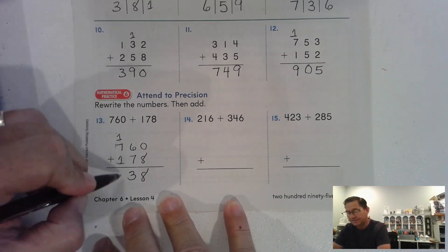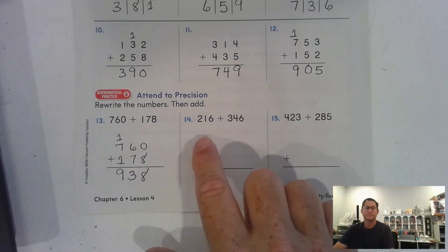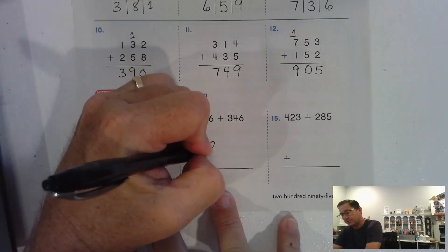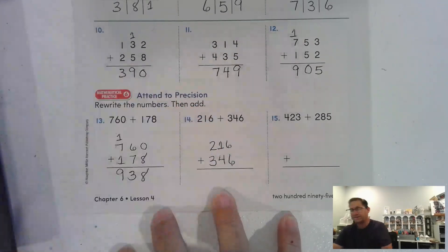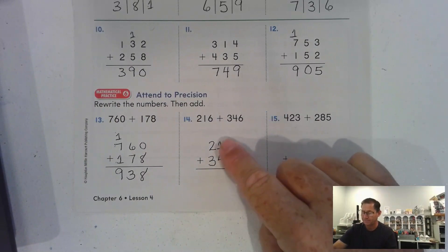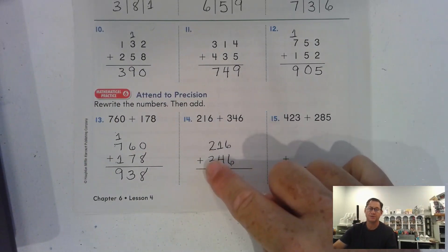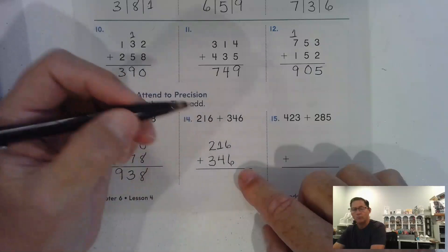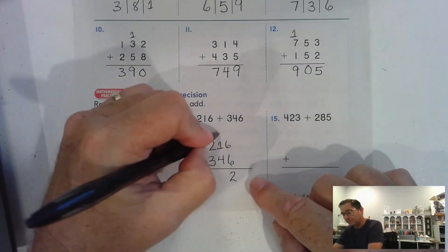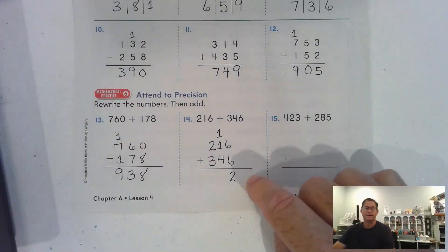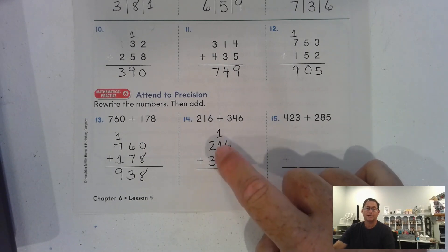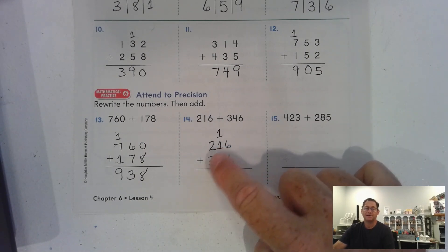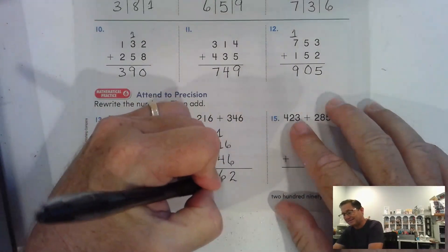Seven hundred plus one hundred is eight hundred, plus the regrouped hundred gives us nine hundred. Number fourteen: 216 plus 346 — check your work, make sure ones, tens, and hundreds are lined up. Six and six is twelve ones — regroup that as one ten and two ones. Add the tens: four tens plus one ten is five tens, plus the regrouped ten gives us six tens.